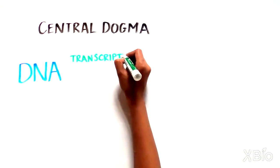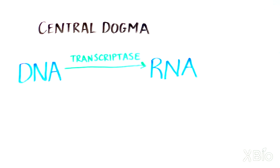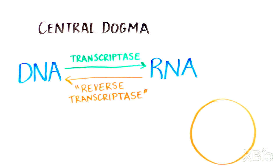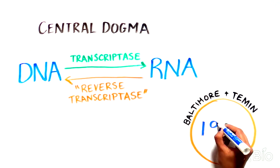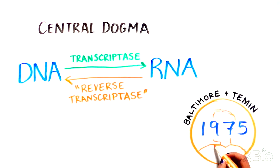Information was flowing in the opposite direction that Francis Crick had proposed in the central dogma. This enzyme was later named reverse transcriptase because it does transcription but backwards. This exciting new discovery earned Baltimore and Temin the Nobel Prize in 1975.